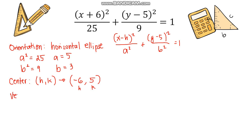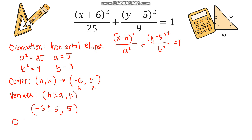Now we identify the vertices. Since the ellipse is horizontal we use (h ± a, k). With h = −6 and a = 5: the first vertex is (−6 + 5, 5) = (−1, 5), and the second vertex is (−6 − 5, 5) = (−11, 5). So the two vertices are at (−1, 5) and (−11, 5).